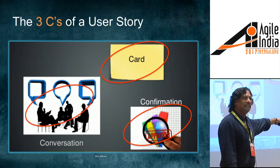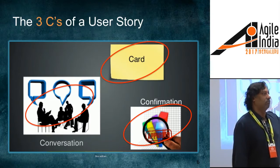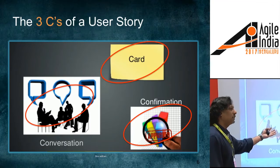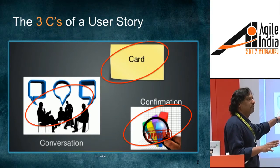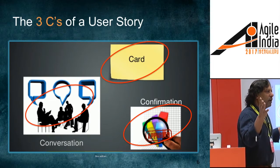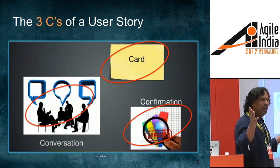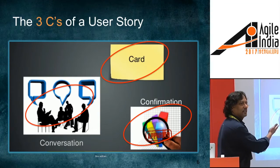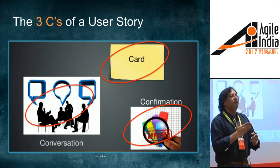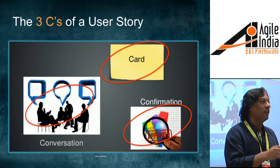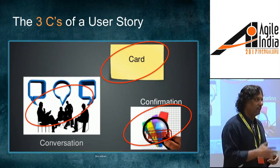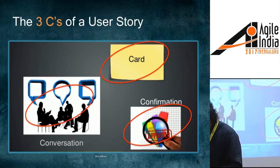Confirmation is critical because it's what's going to ensure you're getting to done. From a practical technique perspective, we talk about acceptance criteria — that's essentially what confirmation is. The important aspect is it should represent a shared understanding for programmers, testers, and business. It should be unambiguous.